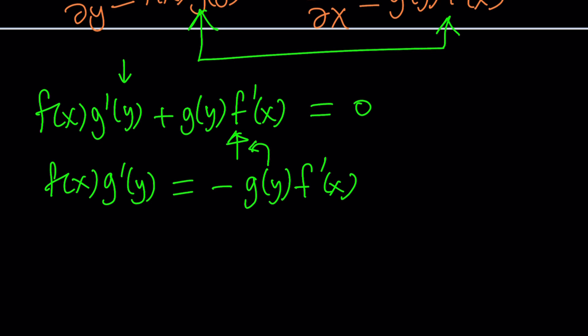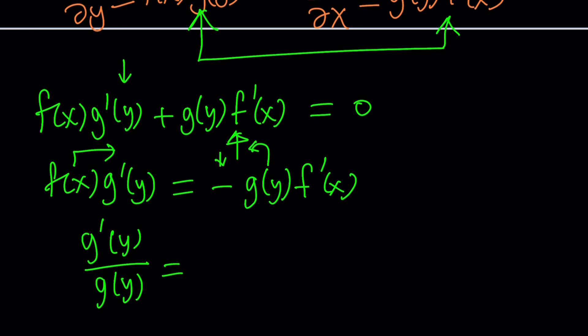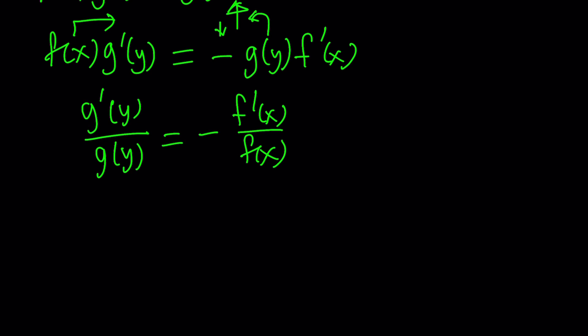Now we're going to separate the variables — bring the y over to the left-hand side and put the x on the right-hand side. Divide and divide. You get g prime of y divided by g of y, leaving the minus sign on the right-hand side, equals minus f prime divided by f. When you look at an equation like this, we have a function and its derivative — the derivative of the function divided by the function itself. That's the derivative of the ln of that function. The derivative of ln of h is h prime divided by h. That's exactly what we have here, except on the right-hand side we have a minus sign, which is just a constant being multiplied.